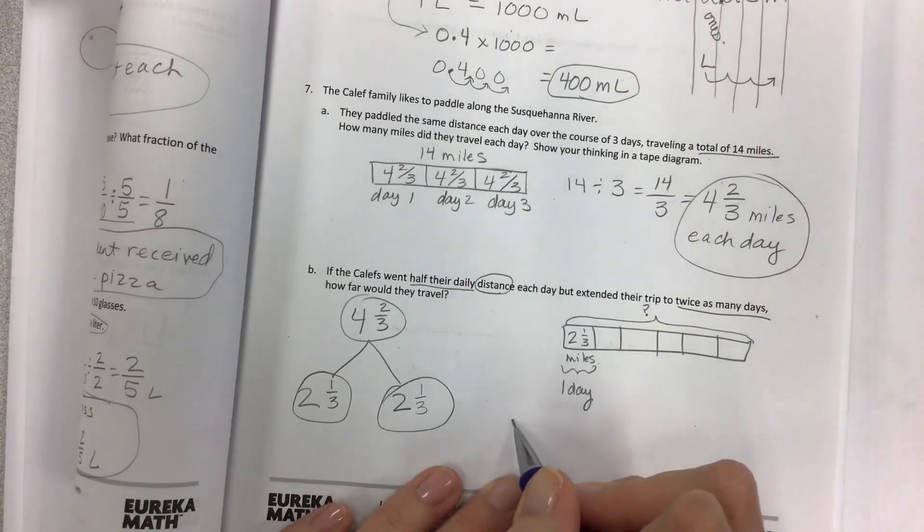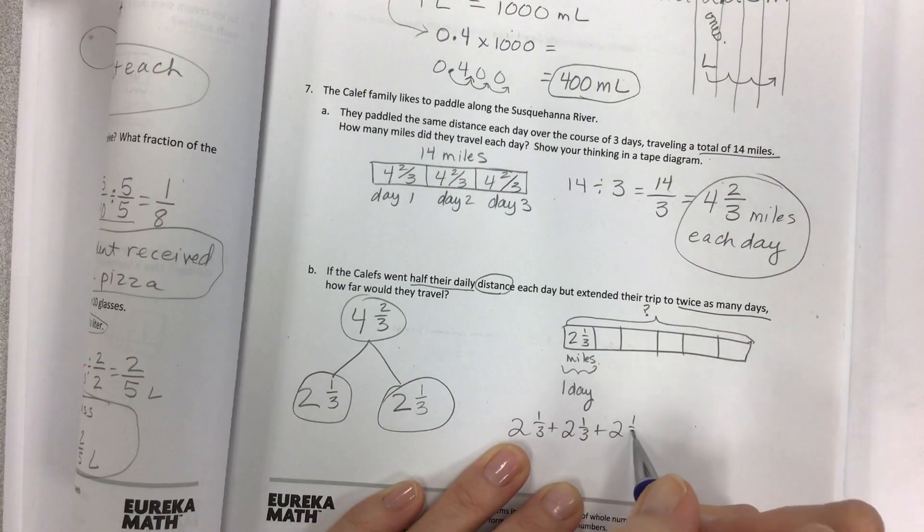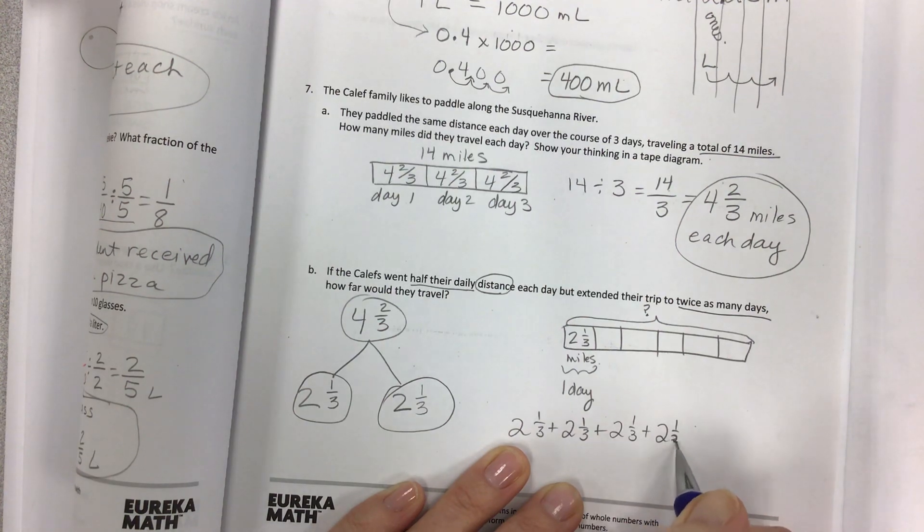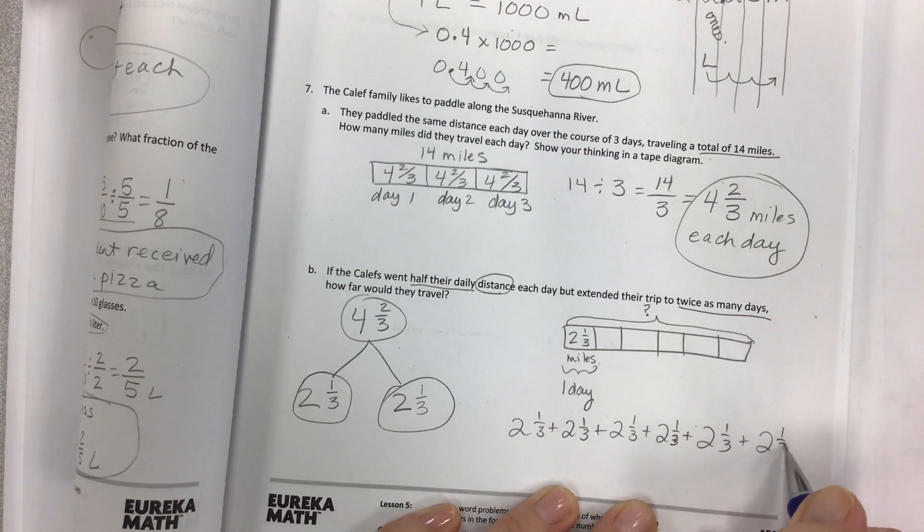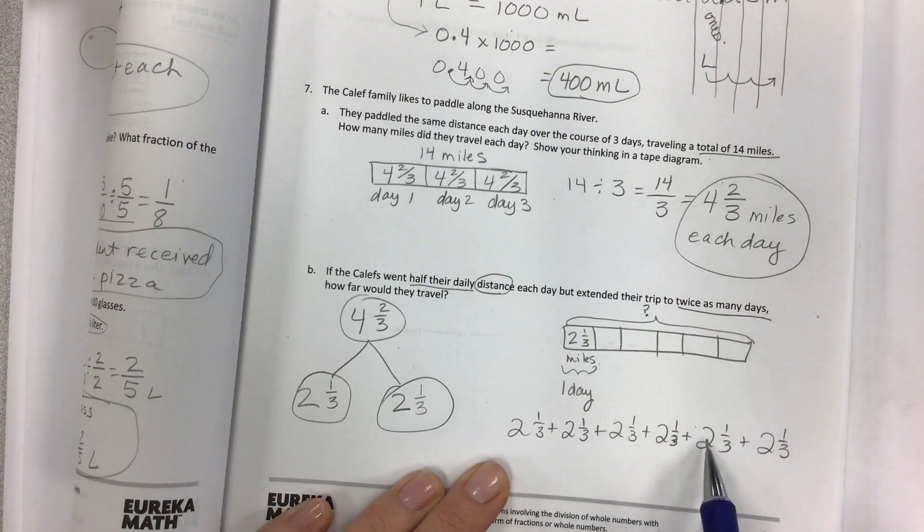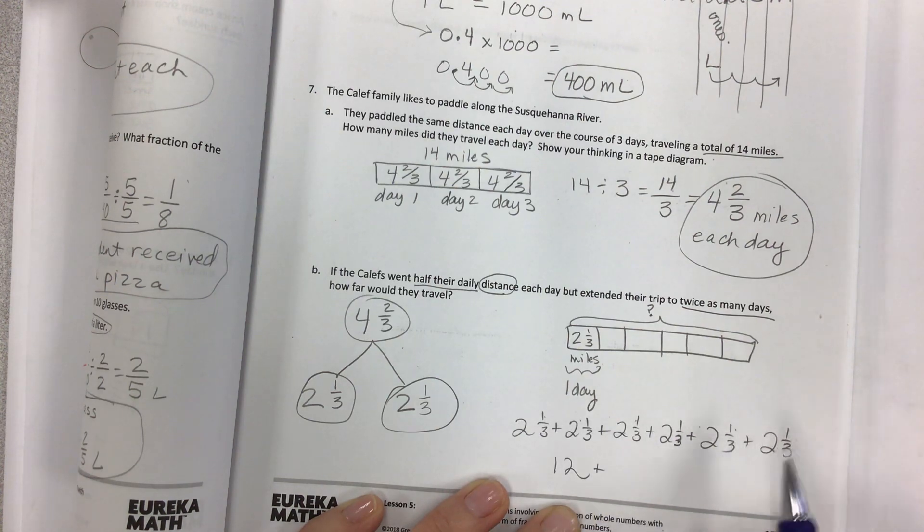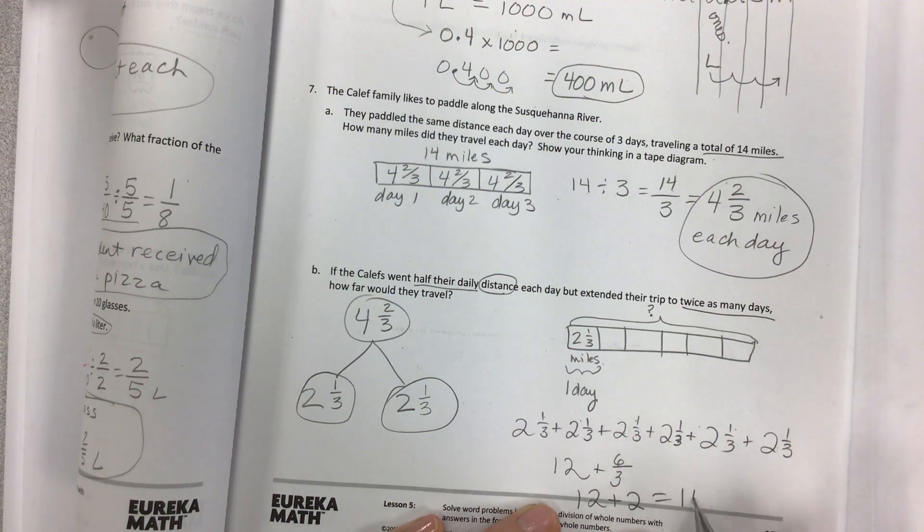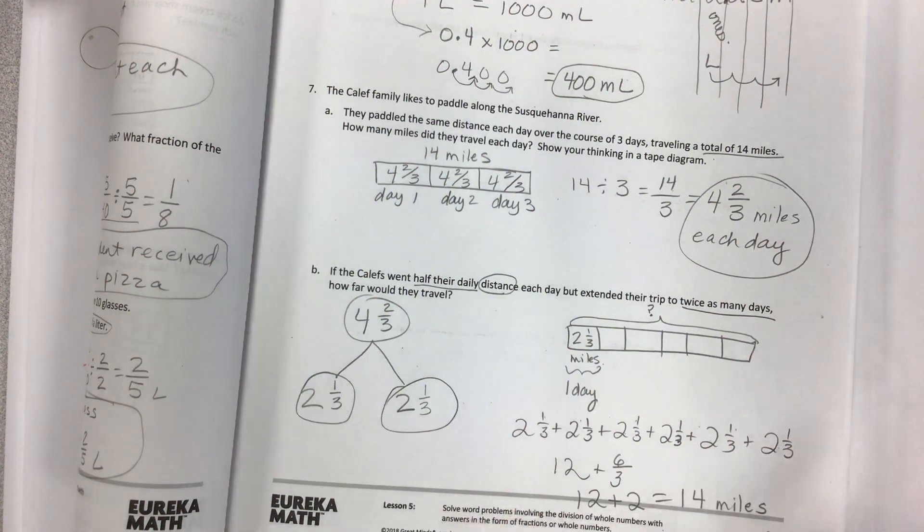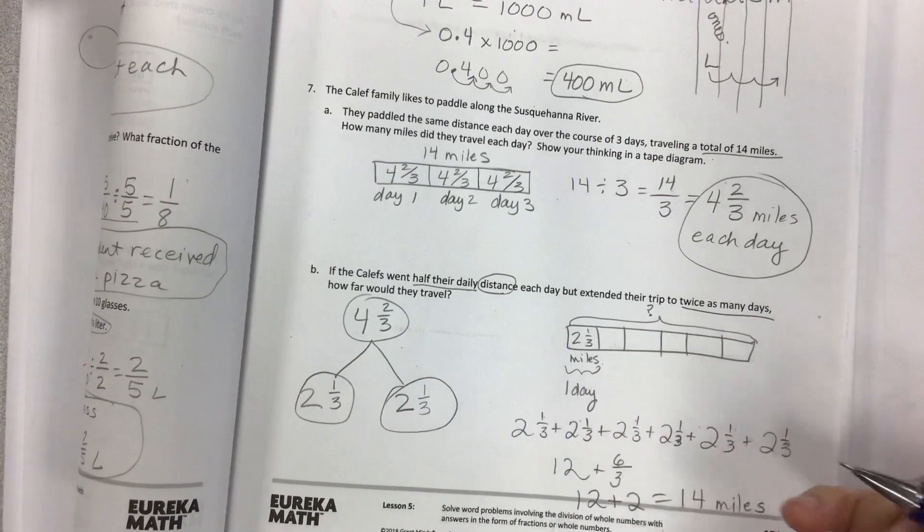But if I prove that by doing 2 and a third six times. 2 and a third plus 2 and a third. One, two, three, four, five, six. Then you can add up the whole numbers. 2, 4, 6, 8, 10, 12. Add up your numerators. 1, 2, 3, 4, 5, 6. Denominator stays the same. 6/3 is equal to 2. So I have 12 plus 2, and I get 14 miles again. But that makes sense. Because if they double this and half that, we're still going to end up with the 14 miles.